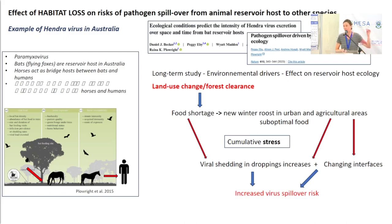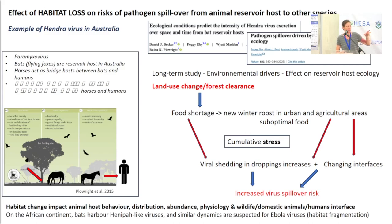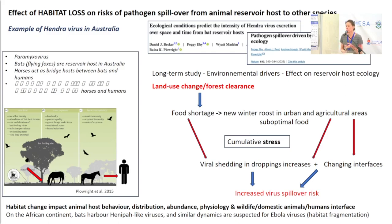Climate change, on top of that, causes more food shortages. It's quite complex, but what it shows is that habitat change can impact the behavior of the animal host, the abundance and distribution of the animal host, its physiology and immune system, and also the interaction with other species, including humans. On the African continent, for instance, Hendra-like viruses have been discovered in bats, and very similar dynamics are suspected for Ebola virus.